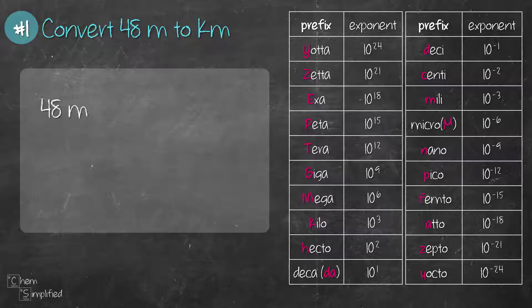To do this we start with 48 meters, multiply, draw a line across. Since we're converting from meter to kilometer, we're going to place meter on the bottom so that they will cancel out. We'll place kilometer on the top because that's what we're looking for. From the prefix table, kilo's exponent is 10 to the power of 3. So that means 1 kilometer equals 10 to the 3 meters.